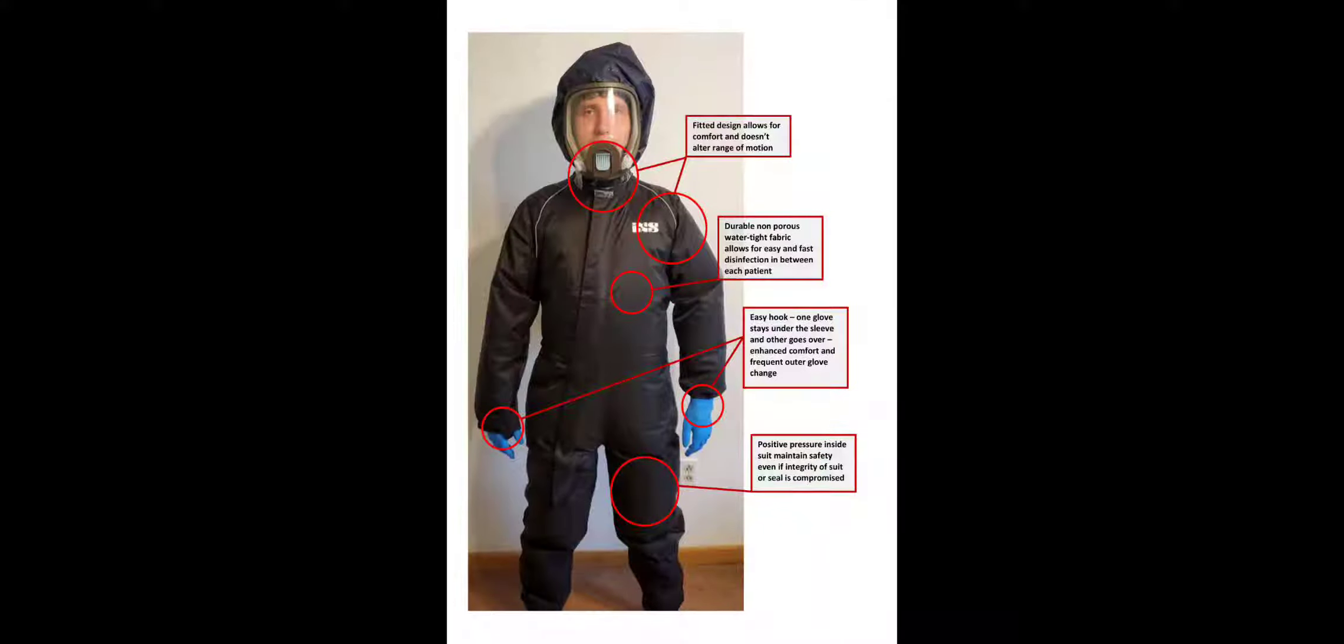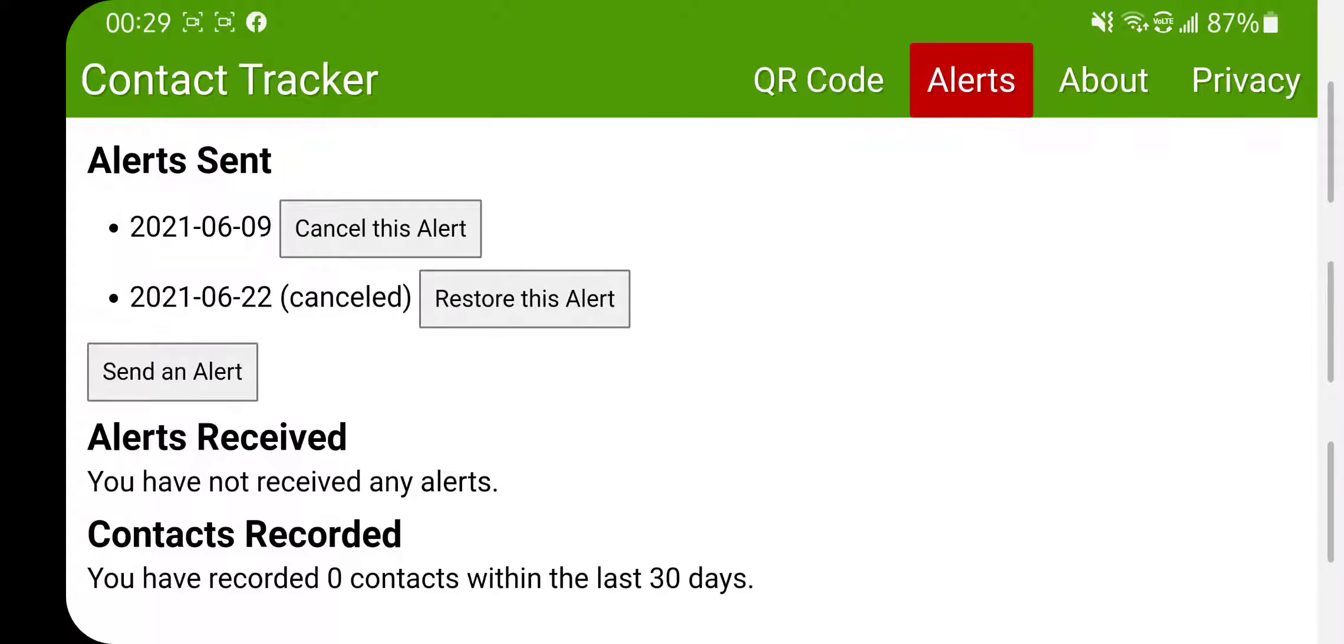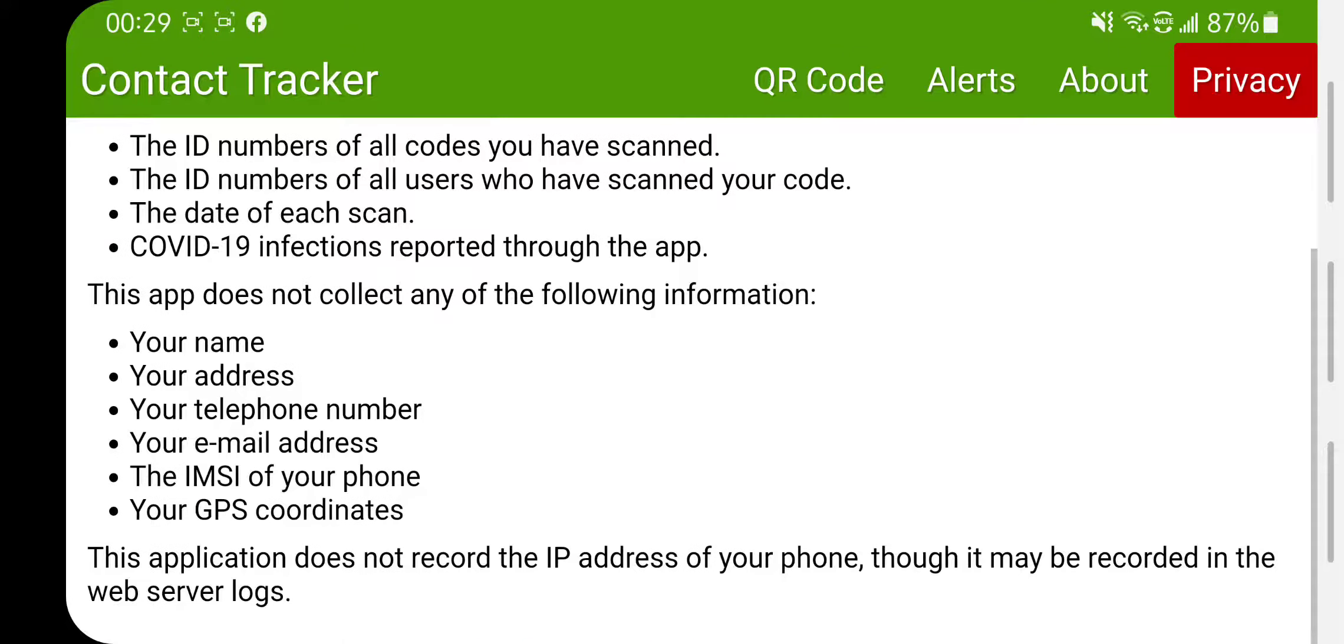Before we jump into PPE solutions, I want to show you that there's an app that helps us track, anonymously track, our infectious contact. You can send alerts, you can cancel alerts. And how it works: it doesn't take any of your information. As you can see here, it doesn't take any of this. It doesn't check your geolocation, it doesn't even take an hour. But it works through Bluetooth by just making a mark that on some day you saw some other person who had this app on their phone.